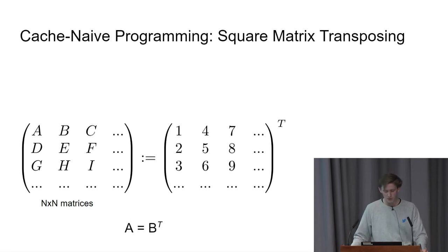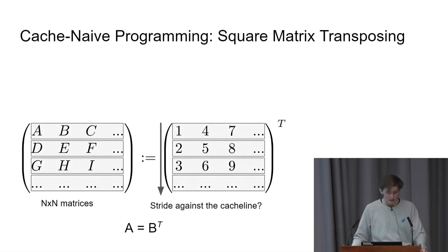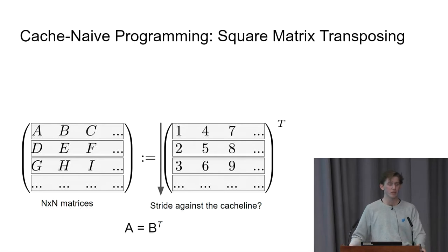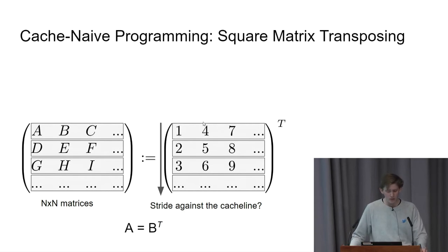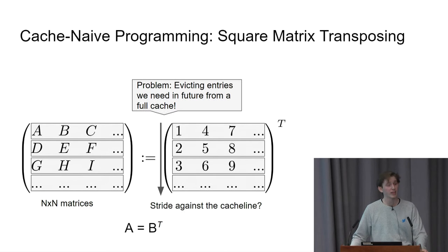Let's say we have a matrix B that we want to transpose and store into a matrix A. When we do the traditional transposing approach, we look at the columns of matrix B and store them in matrix A. However, if the matrix is stored in row-major order — meaning rows are represented contiguously, not columns — we'll be striding against the cache line. Elements one, two, and three will be in different cache lines, and we may miss a large number of times and evict past entries we need before going to the next column. This is a big problem, as you may evict entries you'll need in future due to your cache being full too quickly, and you'll have to bring in the same cache line multiple times.